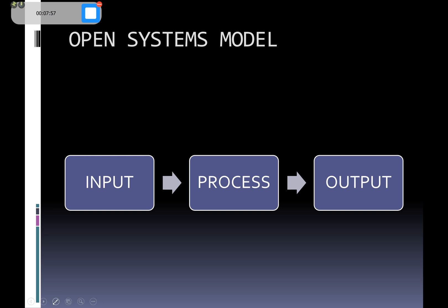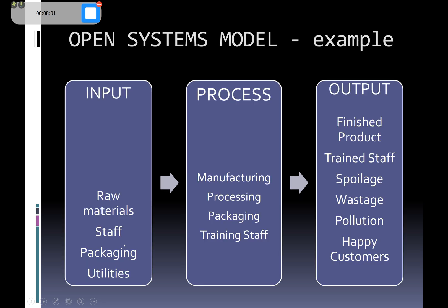That packaged product then goes out to shops and gets distributed to retailers. Looking at the diagram, the inputs are your raw materials, staff, packaging, and utilities such as gas and electricity. It can be anything — for example, if you have apprentices, they would be an input who's not yet very skilled, and the process could include their training and education, with the output at the end of their apprenticeship being a qualified, more highly-skilled employee.